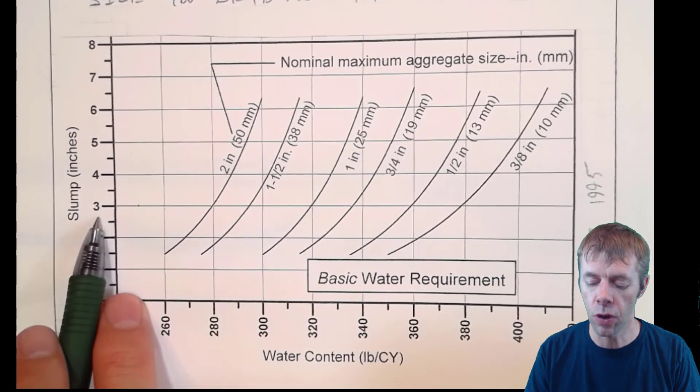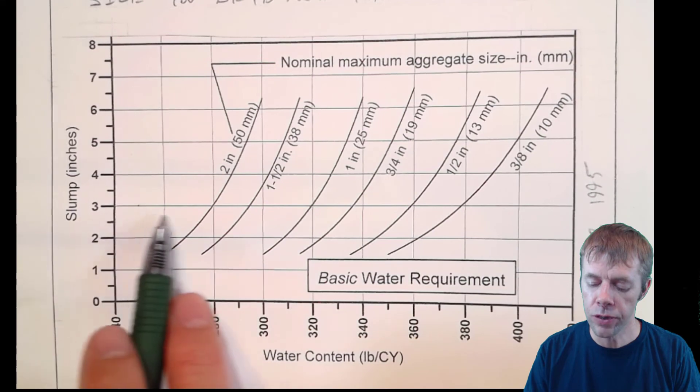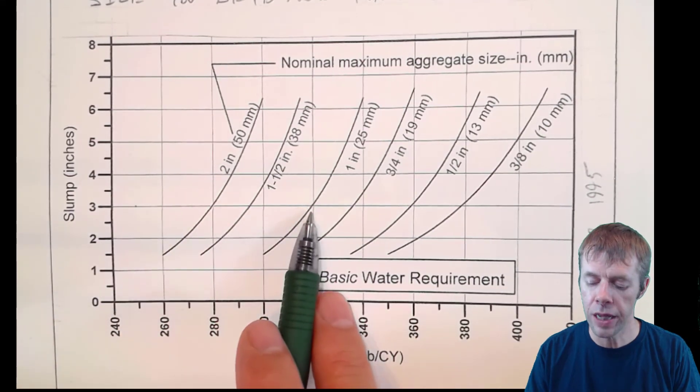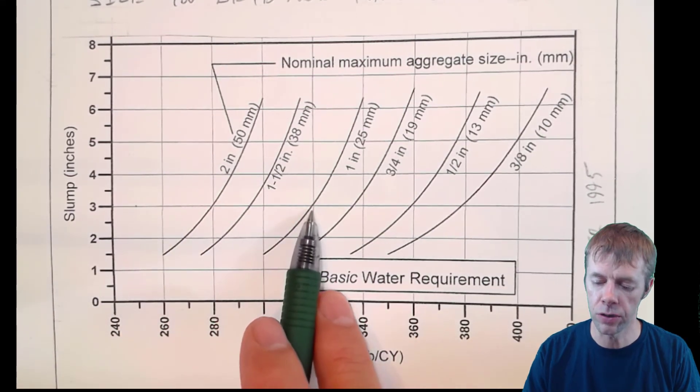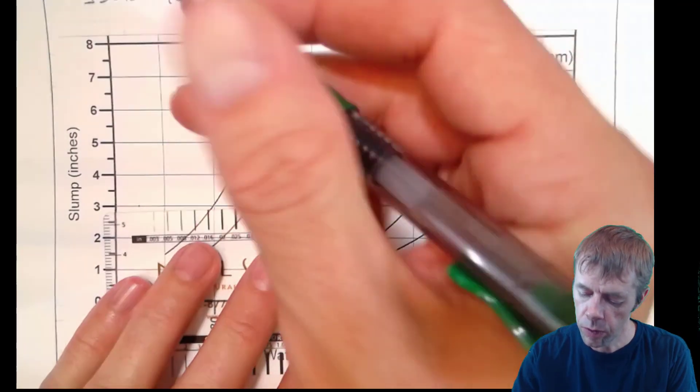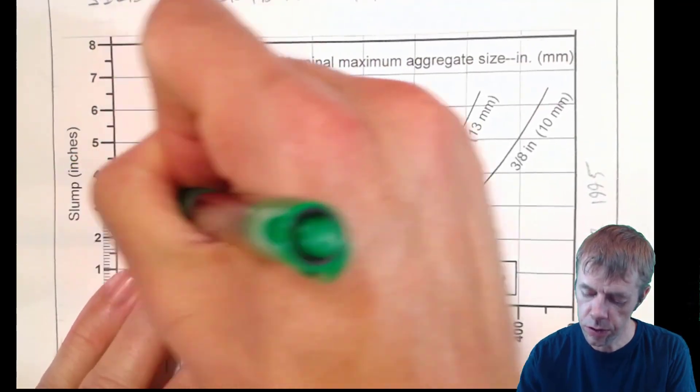So for example, if I have a three-inch slump, and I trace across here, and I'm using a one-inch maximum amount of aggregate size, you can see the magic here. Trace, trace, trace, trace, trace.